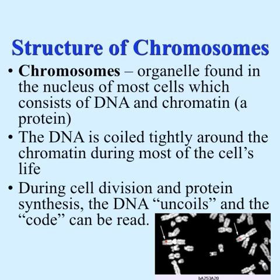Chromosomes are organelles found in the nucleus of most cells, consisting of DNA and chromatid, a protein. DNA is coiled tightly around the chromatid during most of the cell's life. During cell division and protein synthesis, the DNA uncoils so the code can be read.